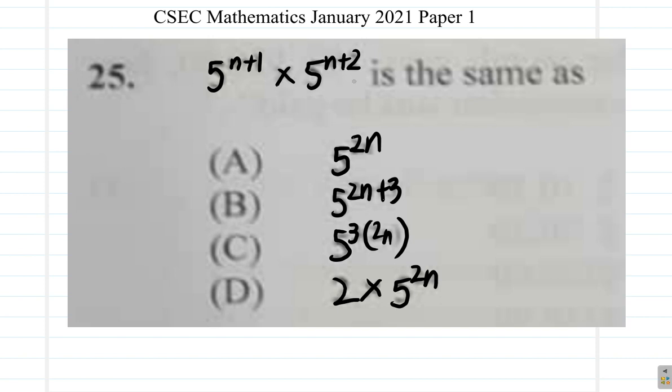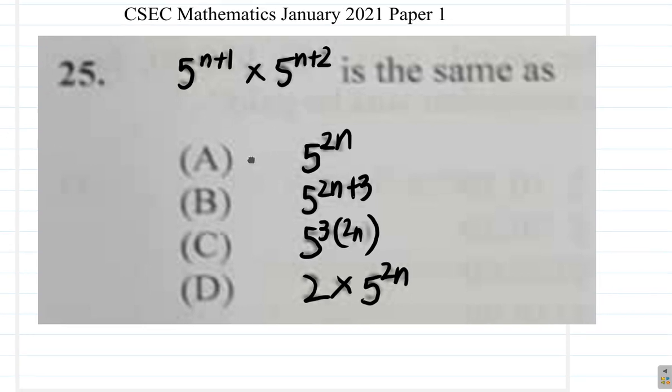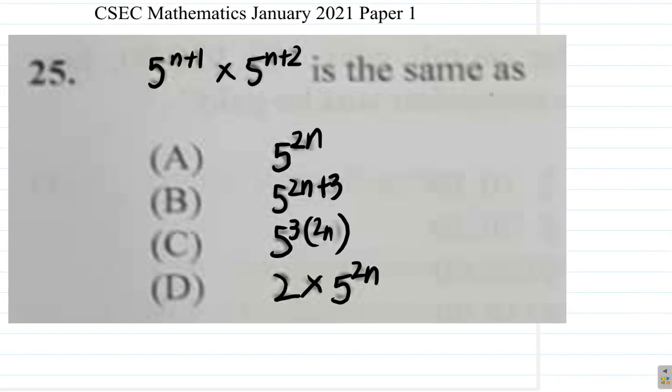What this is saying, 5 to the n plus 1 multiplied by 5 to the n plus 2 is the same as. Now, look at this.